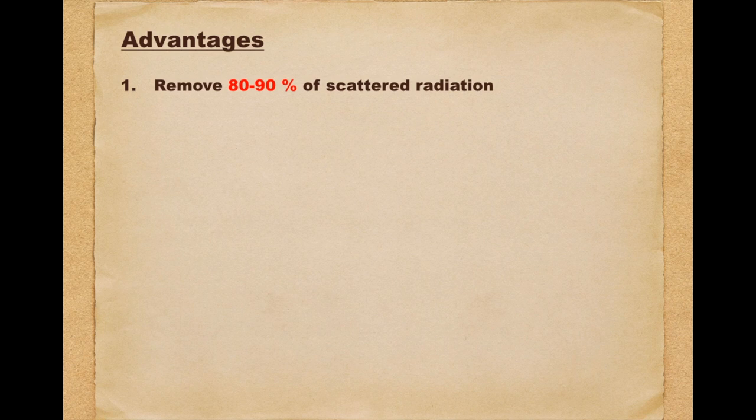So finally, let's sum up the advantages and disadvantages of grids. First let's see the advantages. The presence of grid is usually able to remove as much as 80-90% of the scattered radiation.